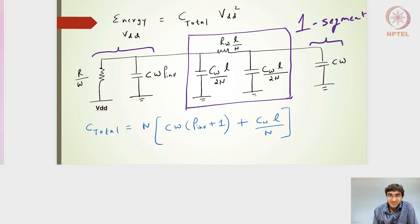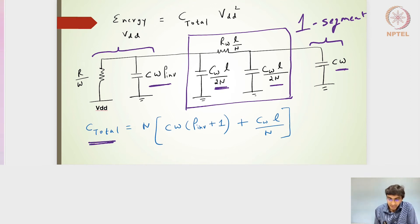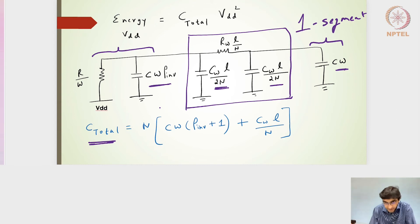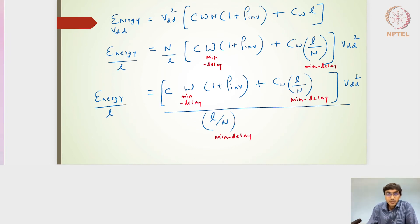For an RC circuit connected to VDD, the overall energy delivered by VDD is C·VDD². So if I find the total capacitances — there are four such capacitances in one segment — and multiply by VDD², that gives the energy delivered by the VDD rail. The total capacitance for one segment multiplied by N gives the overall capacitance for the full wire length L segmented into N parts.